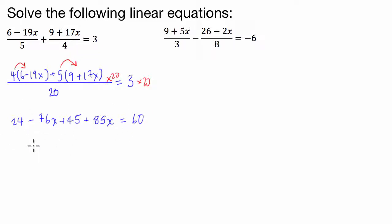So you can see I've already dealt with the fraction here straight away. Now I combine my like terms. So my like terms are going to be 24 and 45, and I also have negative 76x and 85x. So 24 plus 45 is 69, negative 76 plus 85, we've got plus 9x, and that's equal to 60.